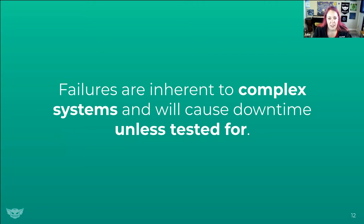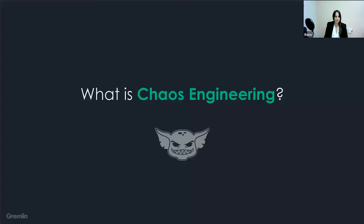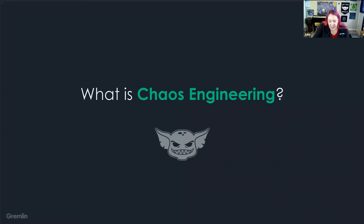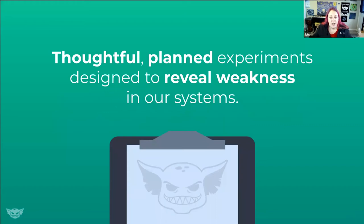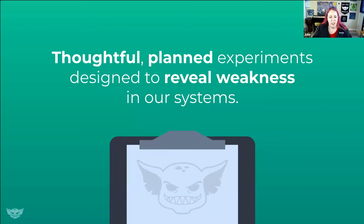Moving to the cloud brought great things like the ability to scale, but it also made our systems much more complex, requiring new ways to build and test applications. Reliability is no accident — it's a practiced way of making sure our systems are resilient. Chaos engineering brings that together with thoughtful and planned experiments that reveal weaknesses, both in our technical systems and within our human systems. We want to look at where our tech is broken, whether user experience breaks, how monitoring and alerting work, and whether auto scaling works.